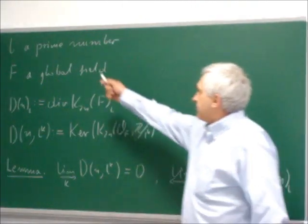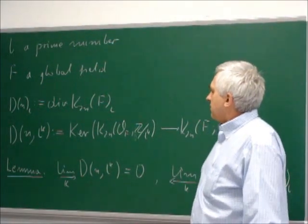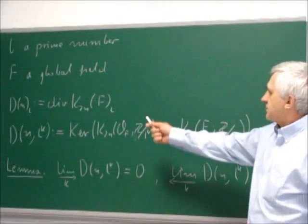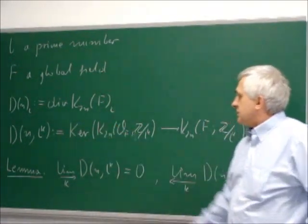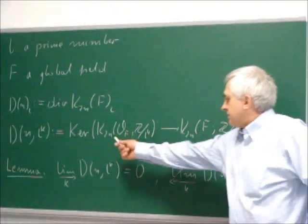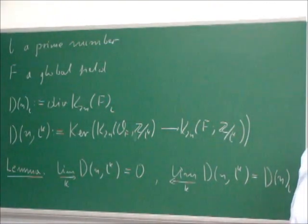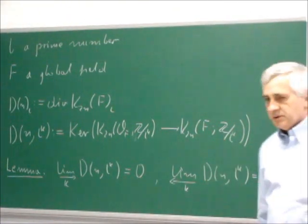In this talk, L is a prime number and F is a global field. D(n,L) is a group of divisible elements, and D(n,L,K), a group related to D(n,L), is a kernel of a natural map from K-theory of a ring of integers to K-theory of a global field.